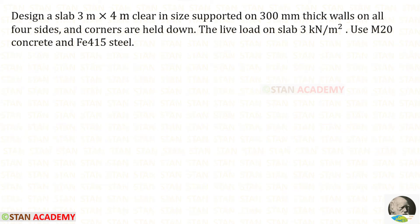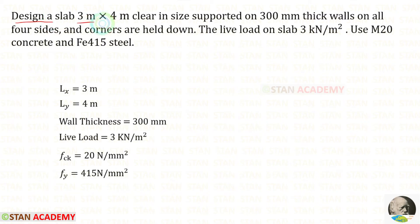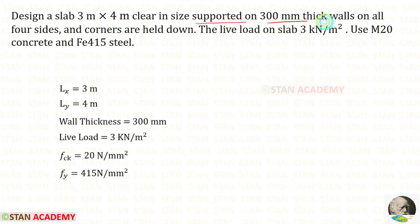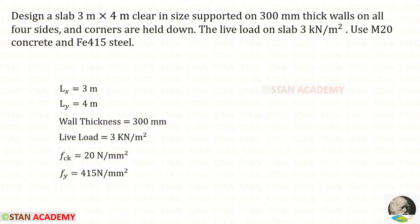Hello everyone. Today we are going to design a two-way slab. Let us read the question and write the given data. Design a slab 3 meter by 4 meter clear in size. The short side is LX and the long side is LY, supported on 300 millimeter thick walls, and corners are held down — meaning there is an upper floor or wall or column above the slab. The live load is 3 kN/m². Use M20 concrete and Fe415 steel; FCK is 20.